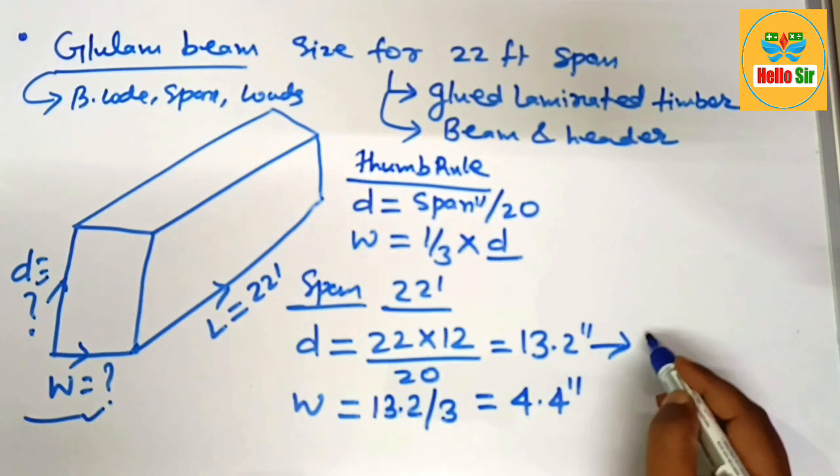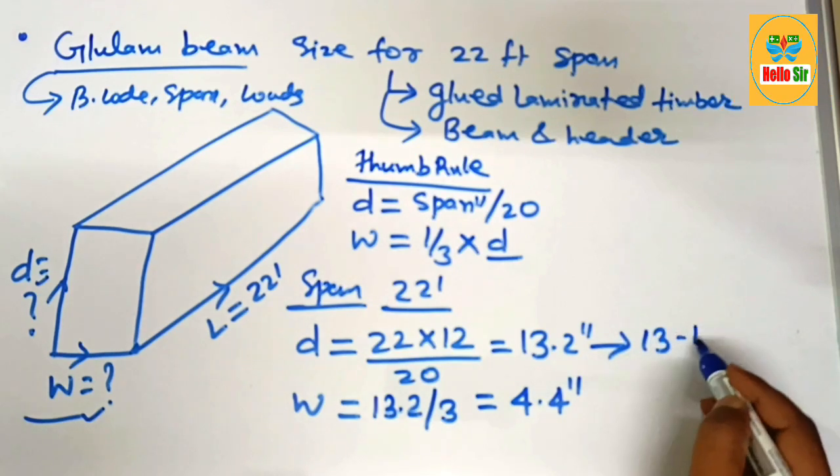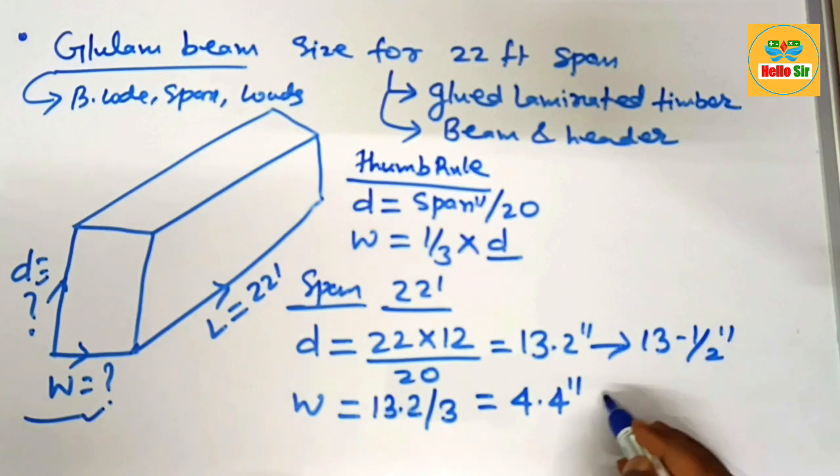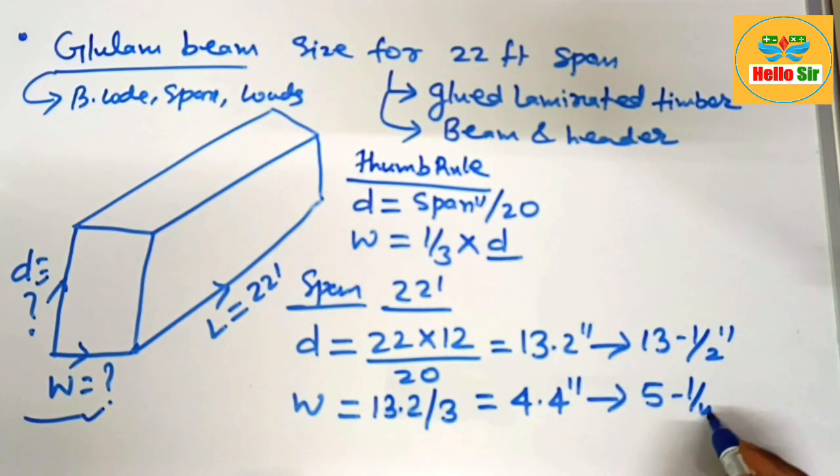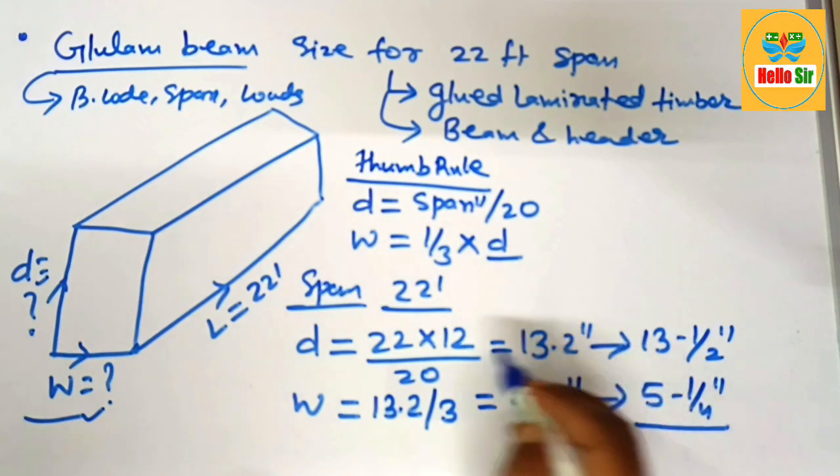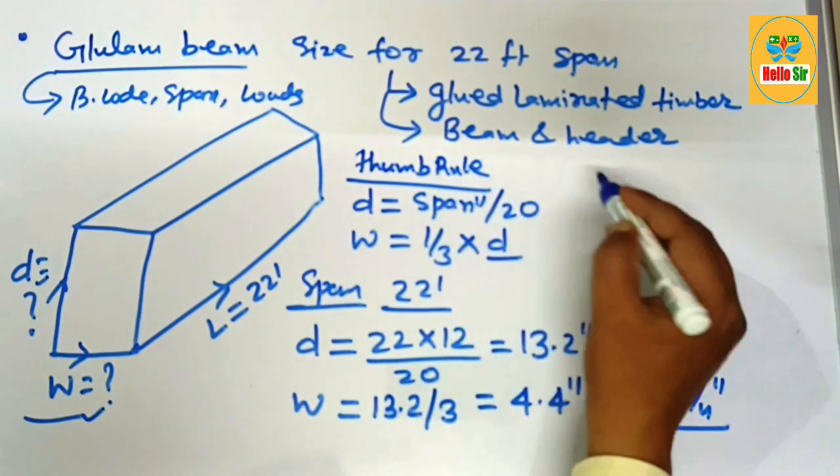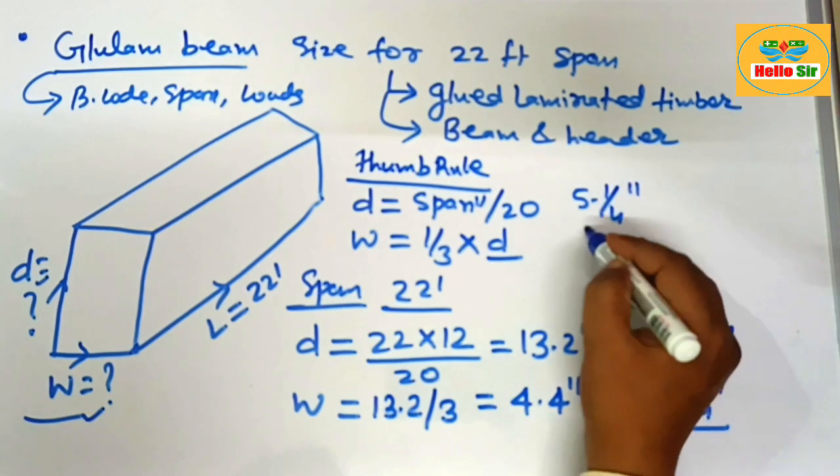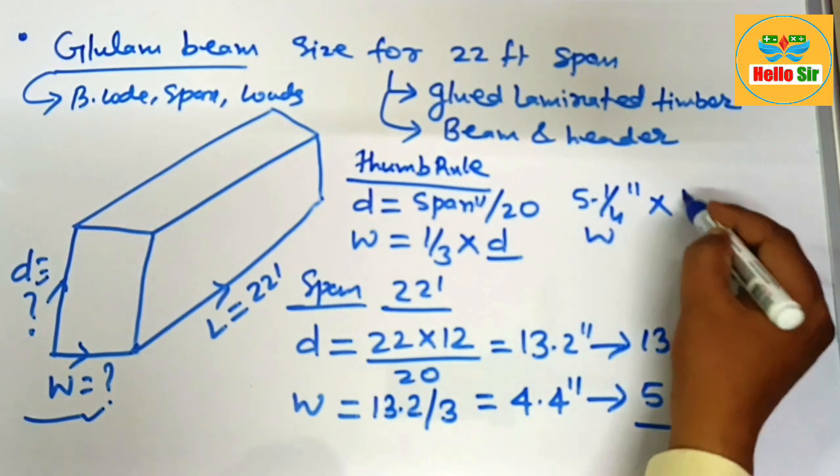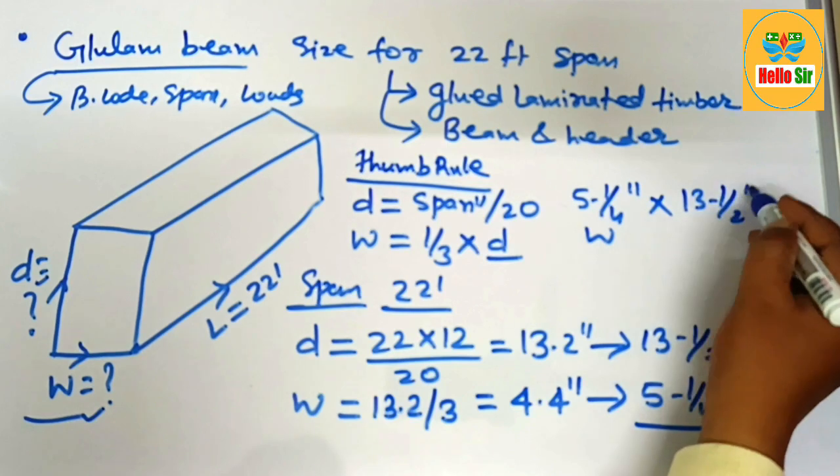And the nominal depth section of the beam is 13 and half inches. And nominal width section of beam is 5 and 1/4 inches. It means you need 5 and 1/4 inches wide beam and 13 and half inches deep beam.